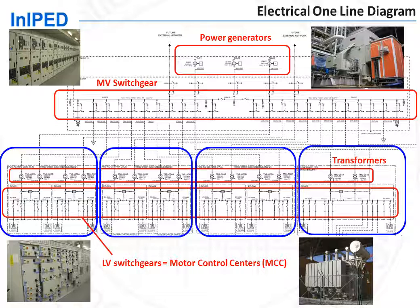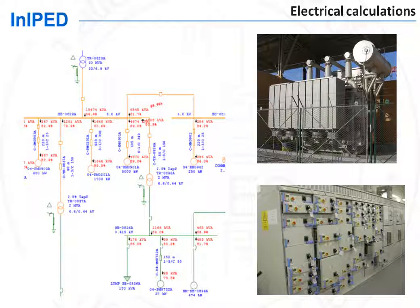Once this electrical system has been set, it is subject to calculations. The load flow analysis performs the calculation of the voltage and current in every part of the system, as well as short-circuit calculations. It allows to identify the maximum current that each equipment must be able to sustain, hence to define the rating of this equipment. Once this is done, equipment data sheets for all the equipment can be issued.